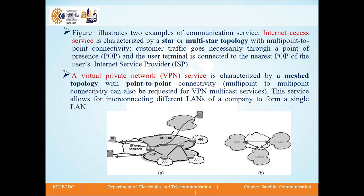Another service is a virtual private network (VPN) service. It is characterized by a meshed topology with point-to-point connectivity or multipoint-to-multipoint connectivity; VPN multicast services are also possible. This service allows for interconnecting different LANs of a company to form a single LAN. Figures A and B are examples of internet access services and virtual private network services respectively.